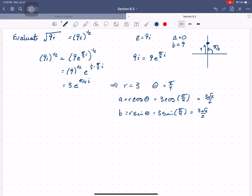But what this means then is that the square root of 9i is equal to a, so 3 root 2 over 2 plus b, 3 root 2 over 2i.